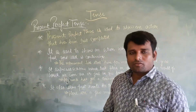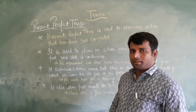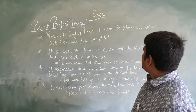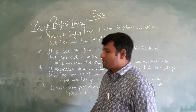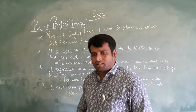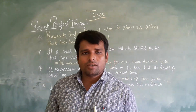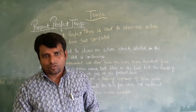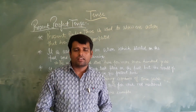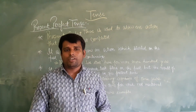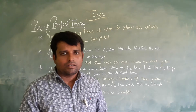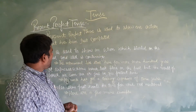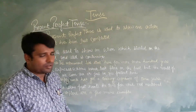Present perfect tense is used to show an action that has been just completed. Aise kariyuk yo bhekt karne ke liye diya jata hai jho abhi abhi pura huwa hai. The action has been just completed.